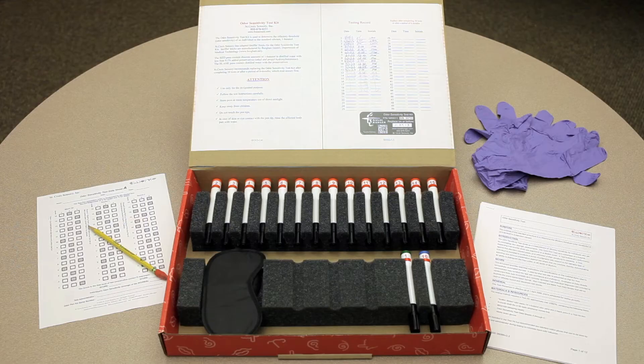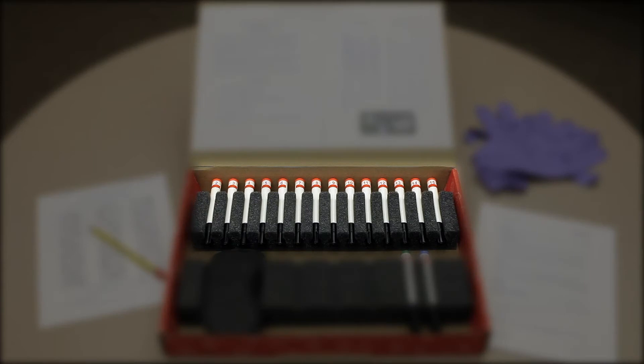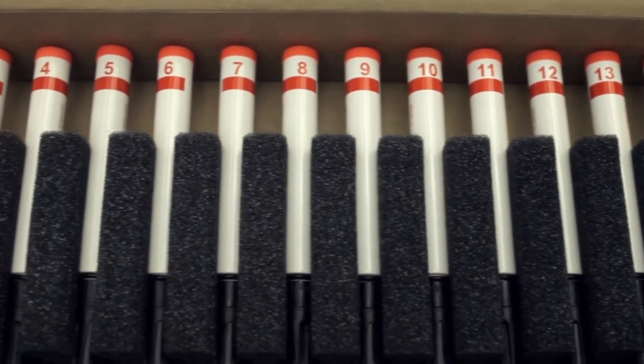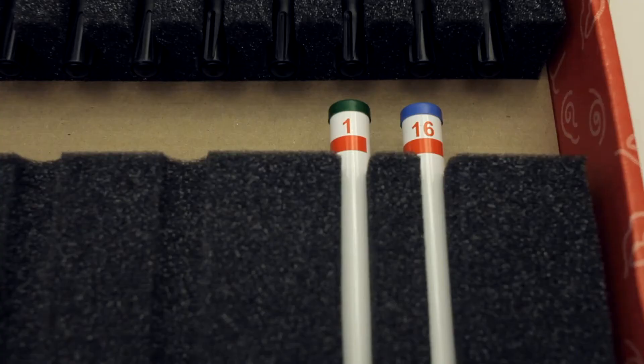This kit's been adapted from testing in medical clinics. The odor sensitivity test kit contains a series of odorant pens containing the odorant n-butanol with increasing concentrations from pen number 15 to pen number 2, two blank pens numbered 1 and 16, a blindfold for the individual being tested, and gloves for the test administrator.